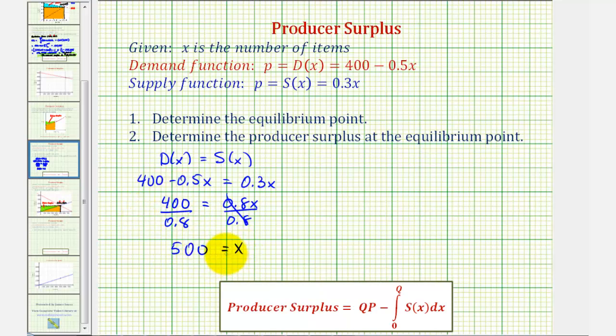So 500 would be the quantity of the equilibrium point, but we still have to find the equilibrium price. To do this, we can use either the supply function or the demand function. Let's go ahead and use the supply function.